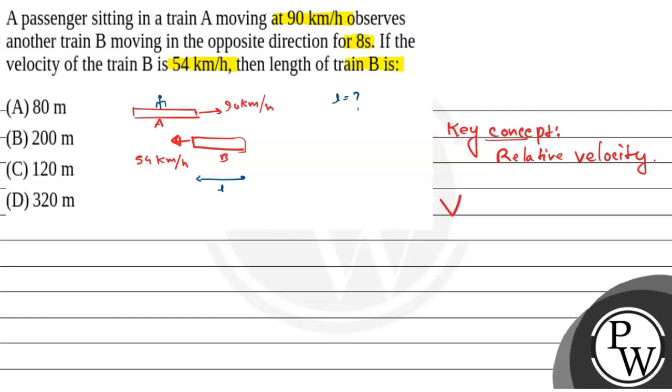Relative velocity of train B with respect to A is 90 minus negative 54. This is in kilometer per hour. This equals 144 kilometer per hour, which equals 144 times 5 by 18 meter per second. This equals 40 meter per second.